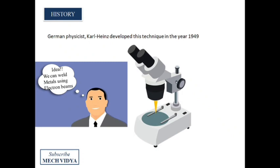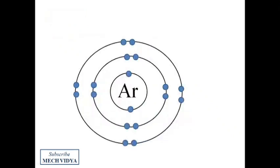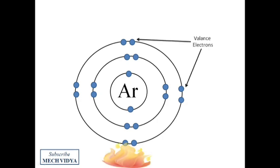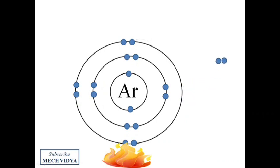We know electrons are negatively charged entities which revolve around an atomic nucleus, and when we provide any type of energy to the atoms, the valence electrons get emitted as free electrons. So in electron beam welding, we use these emitted electrons to do the welding process.